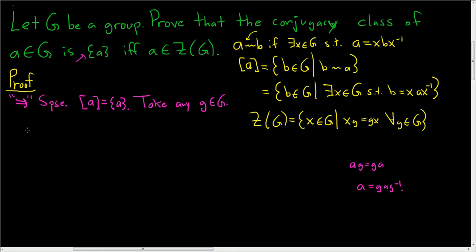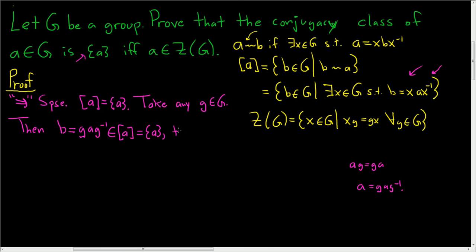So let's see — the element, let's call it B, which is equal to g A g inverse, is an element of G, and I just decided to call it B. But if you look at the conjugacy class of A, all of the elements in this conjugacy class have the form X A X inverse. So this is certainly an element in the conjugacy class of A by definition of conjugacy classes. And that conjugacy class happens to be the singleton set. So this forces g A g inverse to be equal to A.